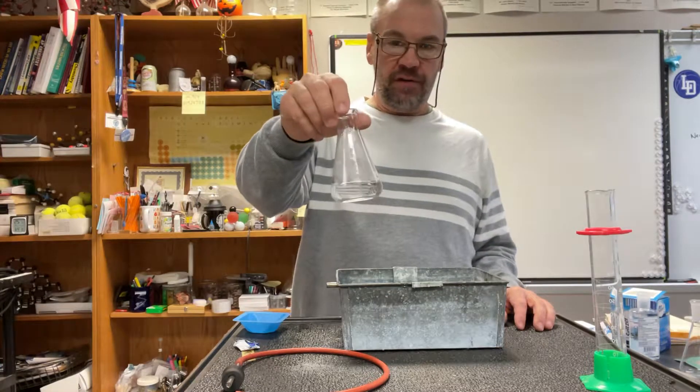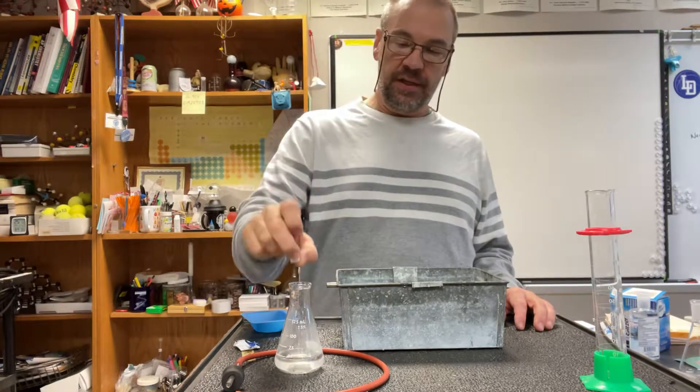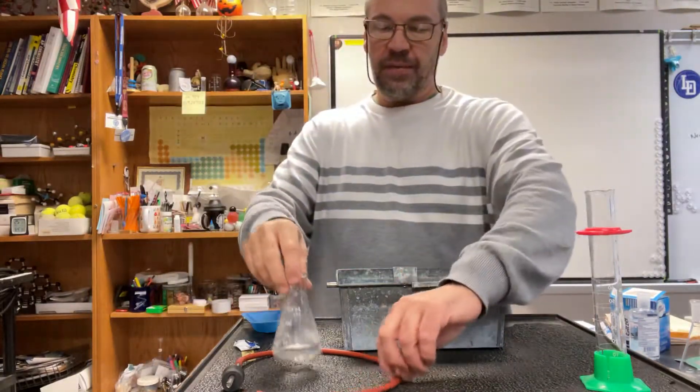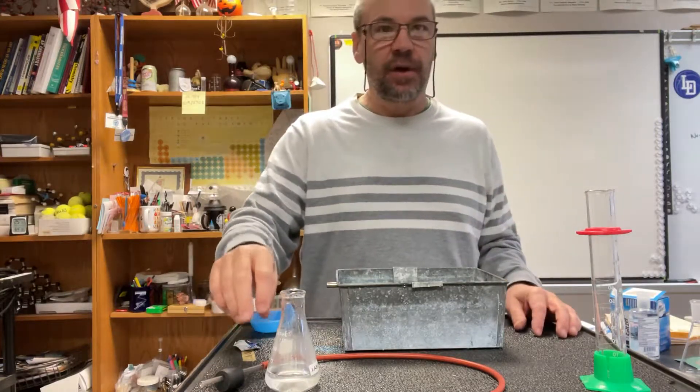This is called an Erlenmeyer flask, and what we're going to do is put a small piece of Alka-Seltzer in the Erlenmeyer flask and then the reaction will take place. One of the products of that reaction is a gas, and the gas is carbon dioxide.